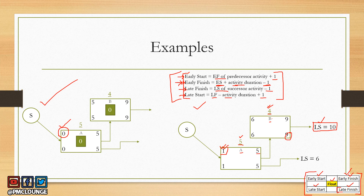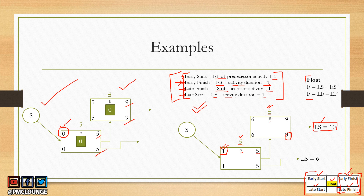Using these formulas, you can similarly calculate late finish and late start for activity A. When you compare both diagrams, you will notice that the early finish and late finish values are the same in both — nine, nine, five, and five. The only difference is in the early start and late start values. However, when you calculate float — which is late start minus early start, or late finish minus early finish — the float values for both activity A and activity B are exactly the same.